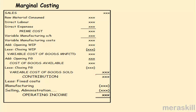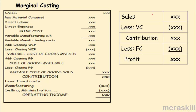If there are variable selling and administration costs, they are also reduced to arrive at contribution. So the basic format is: Sales minus all variable costs equals contribution. Contribution minus fixed costs equals profit. Sales minus variable cost equals contribution, which can also be stated as fixed cost plus profit.